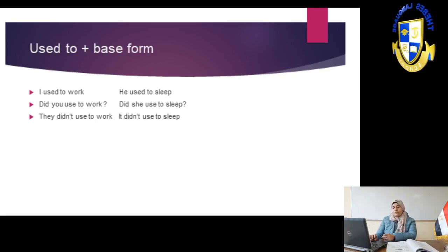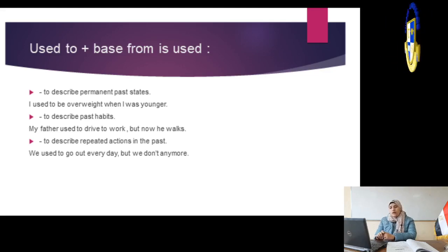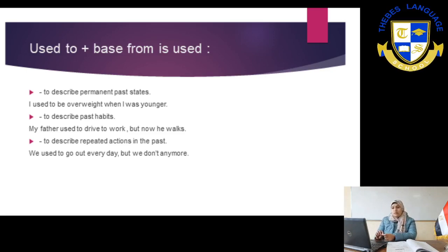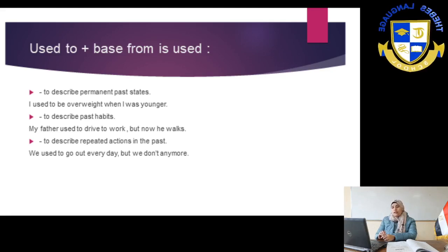We use 'used to' plus infinitive to describe permanent past states — a permanent situation in the past. For example: I used to be overweight when I was younger. Here 'be' is a stative verb, and with stative verbs we use 'used to.' Number two: to describe past habits — something done in the past for a long time: My father used to drive to work, but now he walks. Number three: to describe repeated actions in the past — We used to go out every day, but we don't anymore.